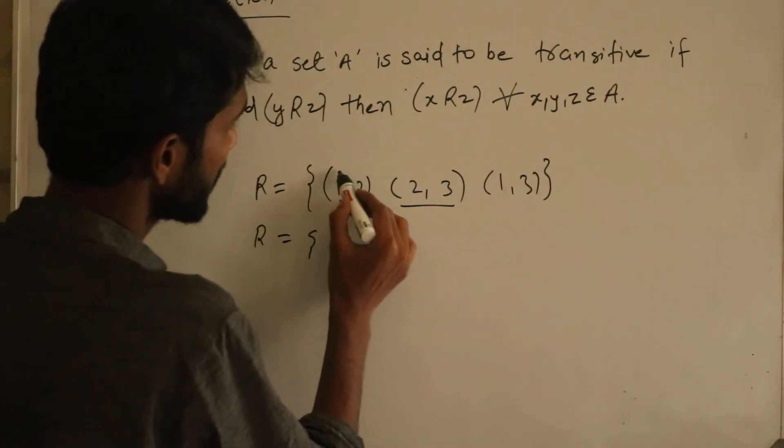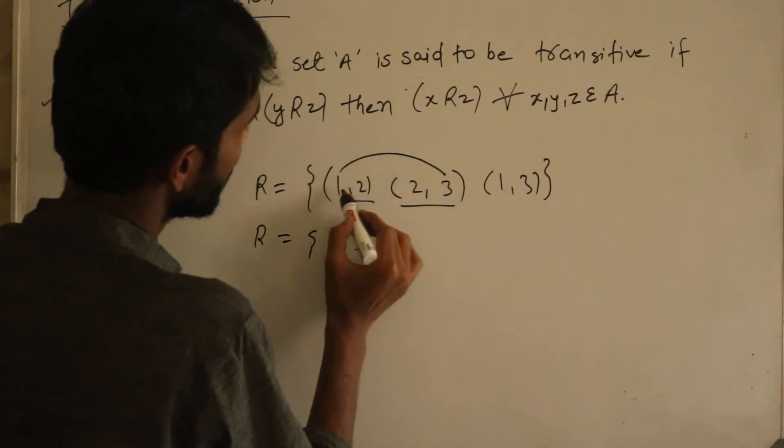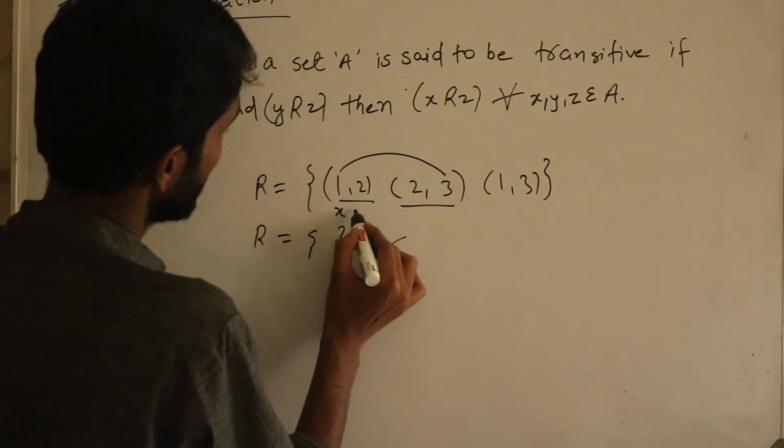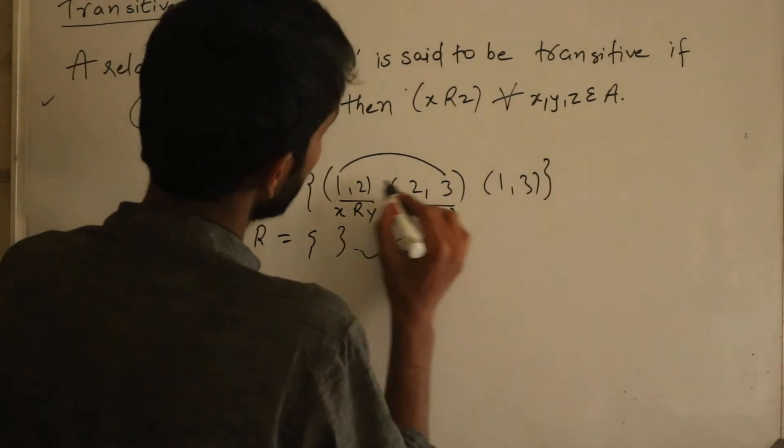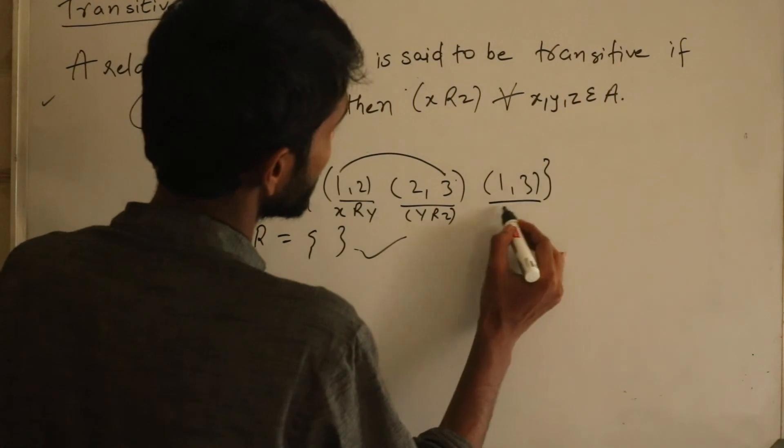I want to say this - this should be present. What is this? X related to Y. What is this? Y related to Z. Then X related to Z should be present.